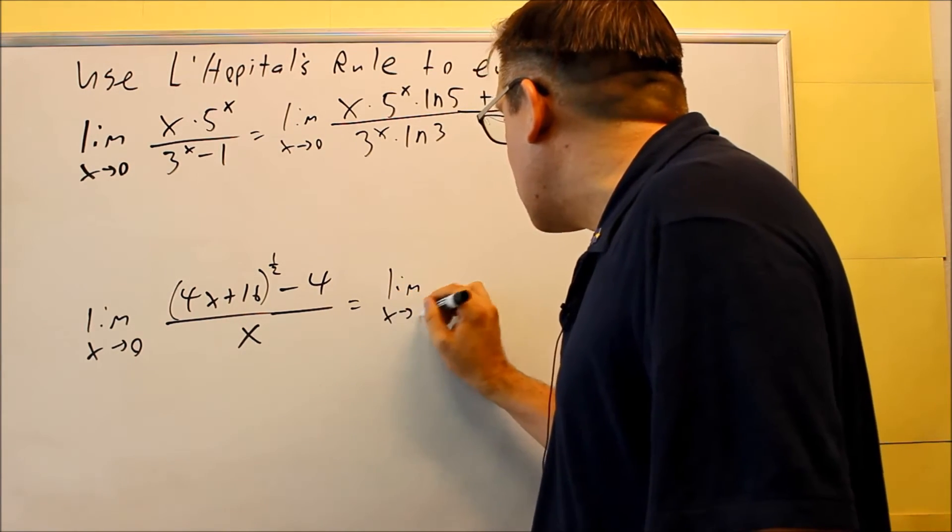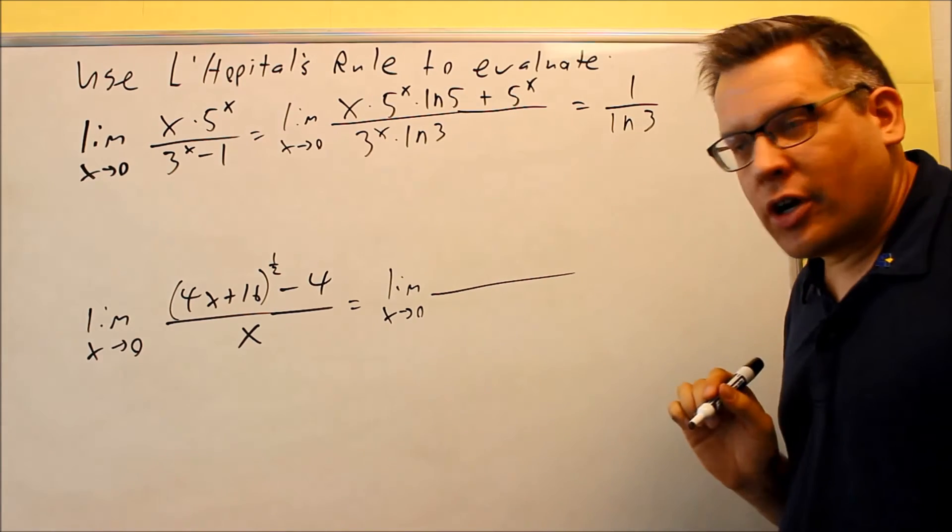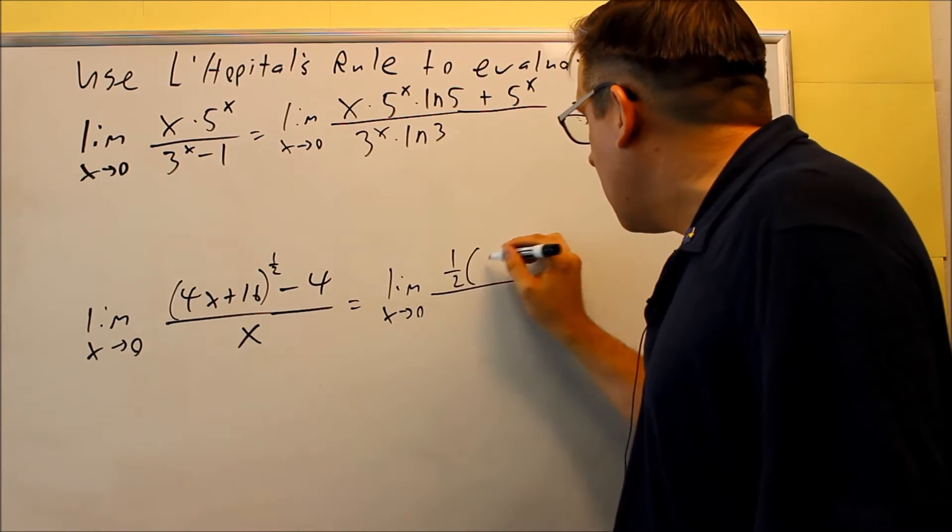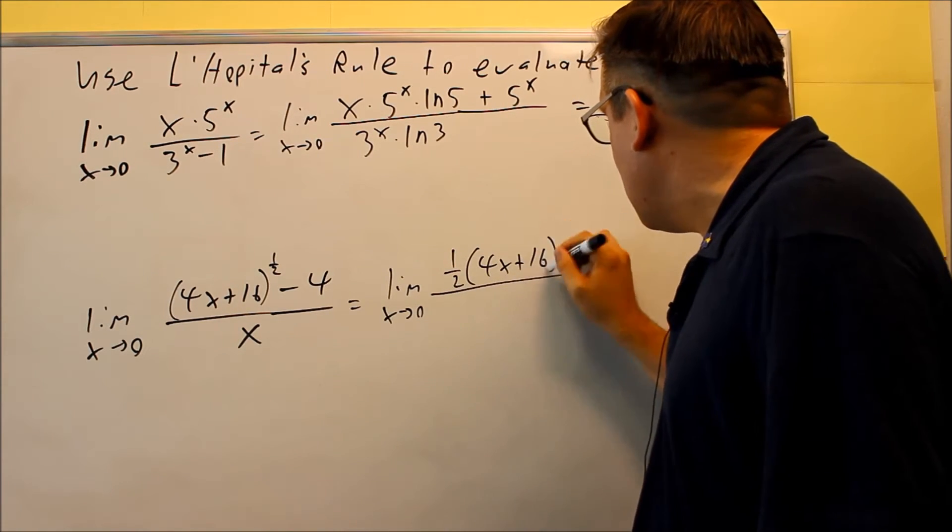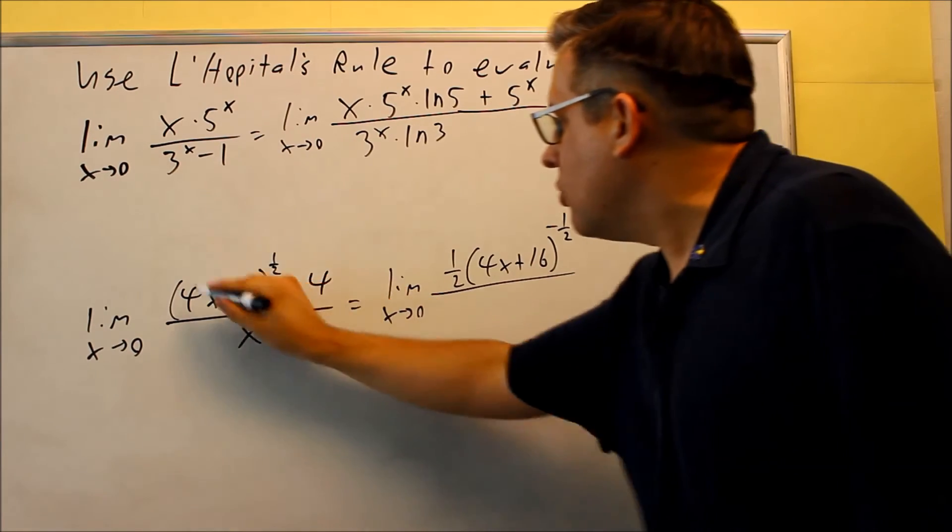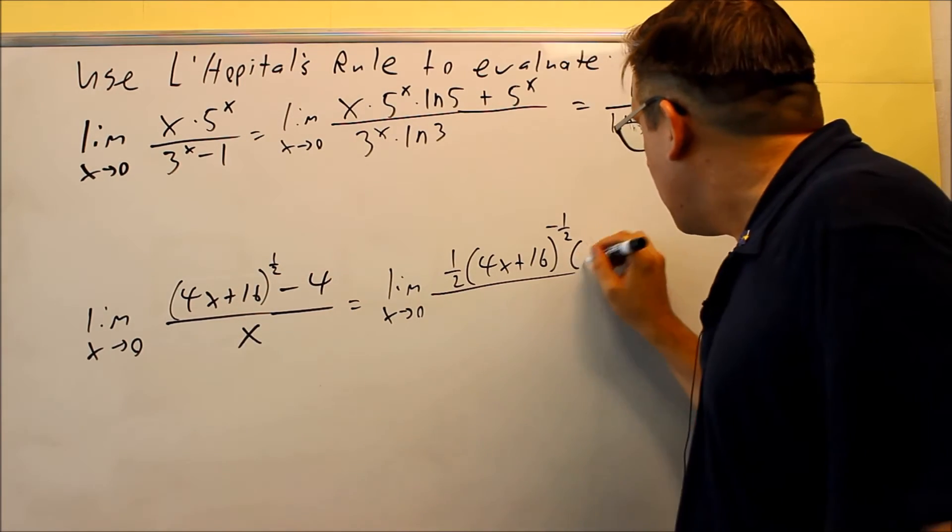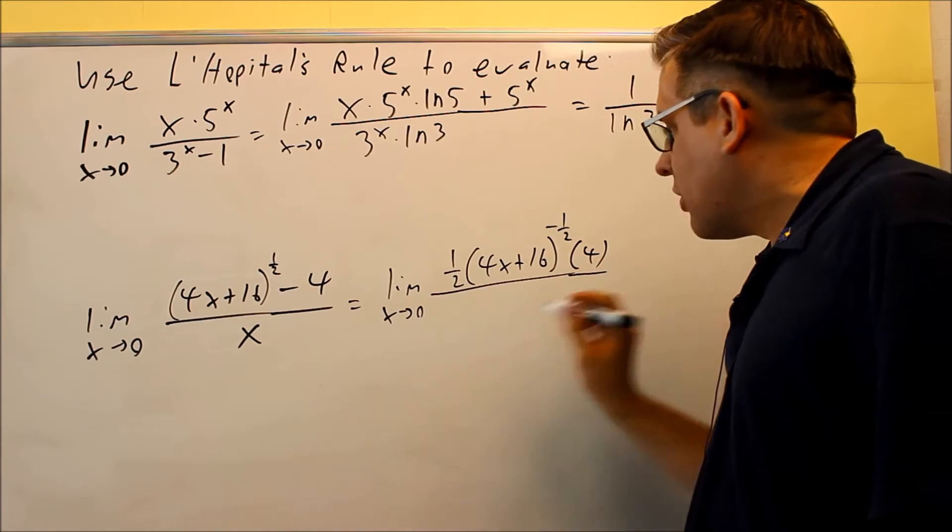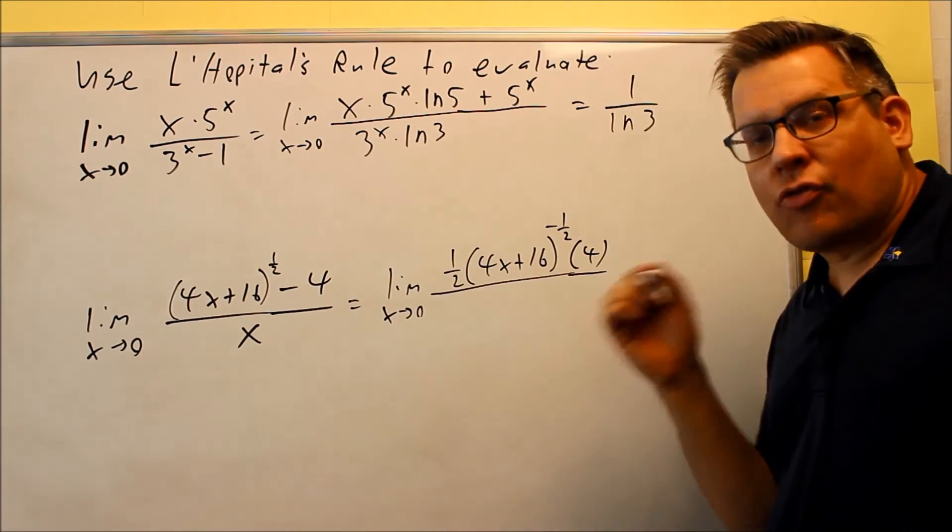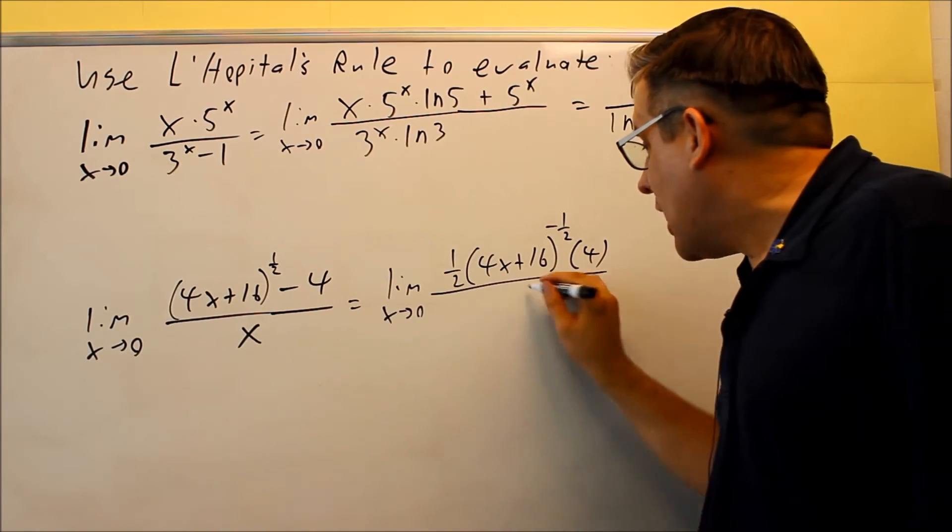We'll do the derivative of the top using the chain rule. One half comes down, (4x + 16) subtract 1 from that power—don't forget the derivative of the inside part. There will be a 4 that comes out, and this is minus 4 (derivative of 0). On the bottom, I get 1.